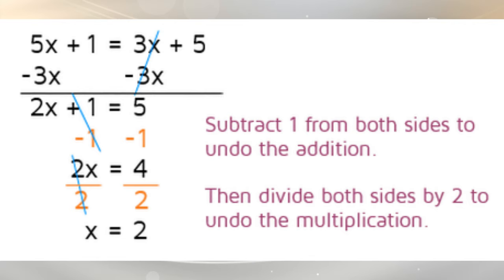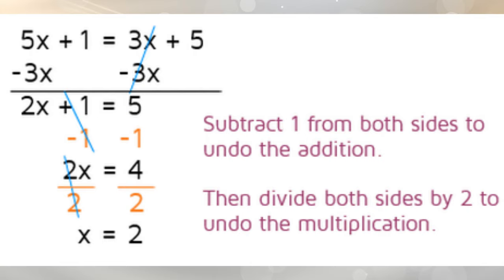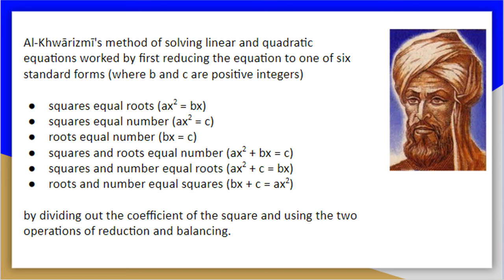Al-Khawarizmi's method of solving linear and quadratic equations worked by first reducing the equation to one of six standard forms by dividing out the coefficients of the square and using two operations of reduction and balancing.